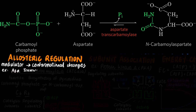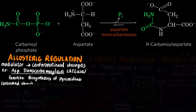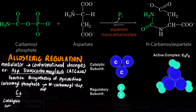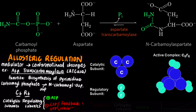For example, the enzyme aspartate transcarbamoylase, abbreviated as ATCase, is subject to both allosteric activation and inhibition. ATCase catalyzes an early step of pyrimidine biosynthesis, combining carbamoyl phosphate and aspartate to produce N-carbamoyl aspartate. ATCase contains six catalytic subunits and six regulatory subunits, abbreviated as C6R6. The regulatory subunit can bind ATP, which serves as an allosteric activator, as high concentrations of ATP indicate high energy levels and promote nucleotide biosynthesis. The regulatory subunit can also bind CTP, which is an allosteric inhibitor through a feedback mechanism.